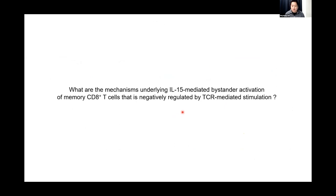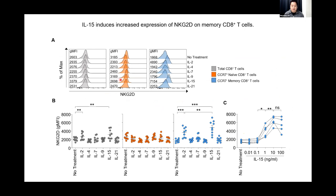However, the mechanisms underlying this opposite regulation induced by IL-15 and TCR stimulation have not been characterized. Therefore, we questioned what are the underlying mechanisms of IL-15-induced bystander activation that is counteracted by the concurrent TCR stimulation. We began by stimulating healthy donor PBMCs with IL-15 or other cytokines belonging to the common gamma chain cytokine family. We then focused on the expression of NKG2D, a marker significantly increased on bystander-activated memory CD8 T-cells. In memory CD8 T-cells, it was IL-15 that was most significantly increasing the expression of NKG2D in a dose-dependent manner.